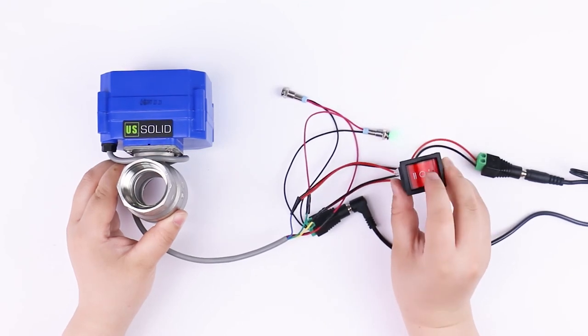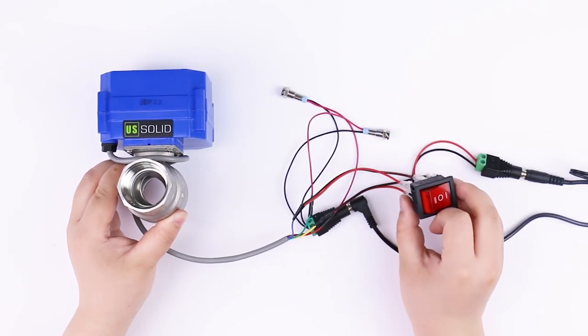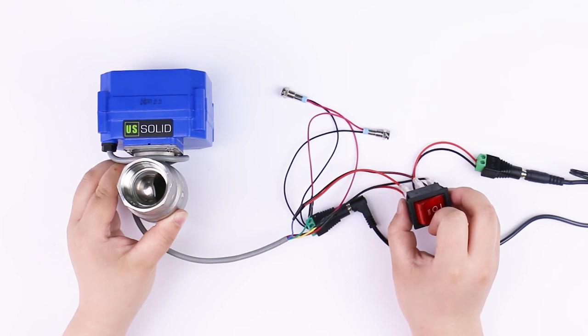When switch is set to close, the valve will close. Once fully closed, the red light will be on.